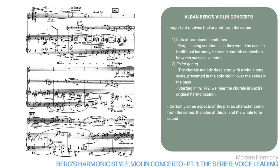What can we conclude from all this? Well, certainly some aspects of the piece's character come from the series — the piles of thirds and the whole-tone sound. And this is possible precisely because the series is intervallically quite limited and therefore has a recognizable character. But this isn't true of all series. For example, here is a series that's much more intervallically varied. Would you really recognize this if it occurred, say, in the bass 20 bars after the first presentation? I don't think I would. So far, we've seen how the series, as well as traditional smooth voice leading, work in this piece. But that still leaves many aspects of Berg's harmony unexplained. To understand these other things, we'll expand our perspective in our next lesson.